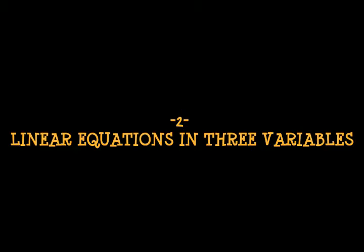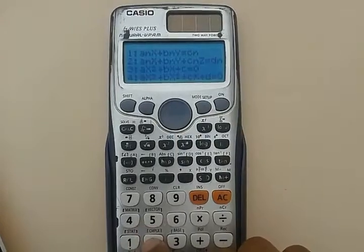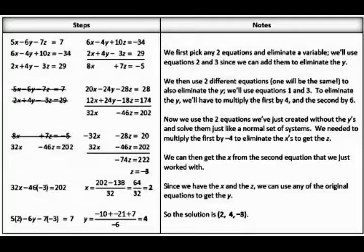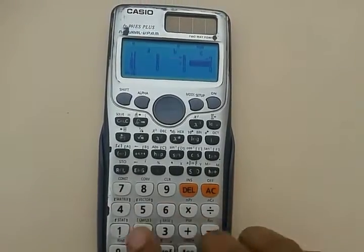The second type is linear equations in three variables. Press MODE button followed by 5, and then press 2 to access linear equations in three variables. Consider this example: solving these equations, we get 2, 4, and minus 3 as x, y, and z.